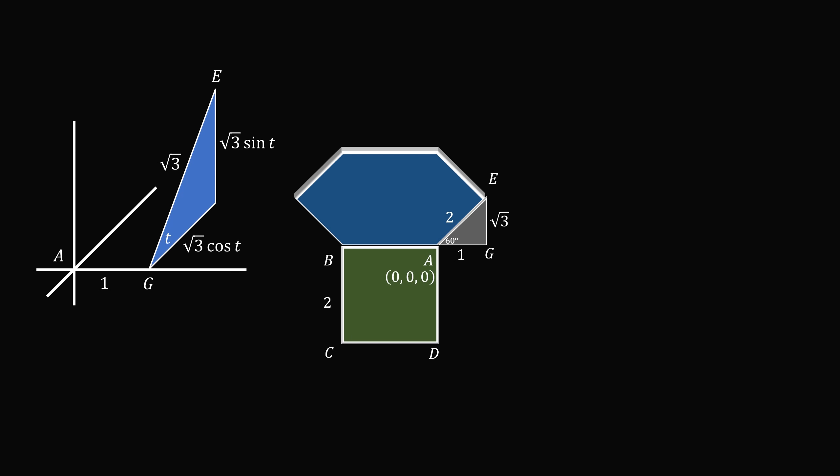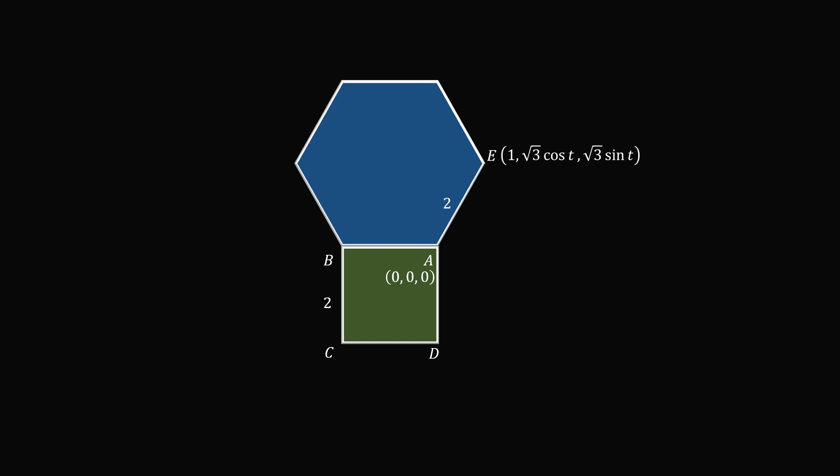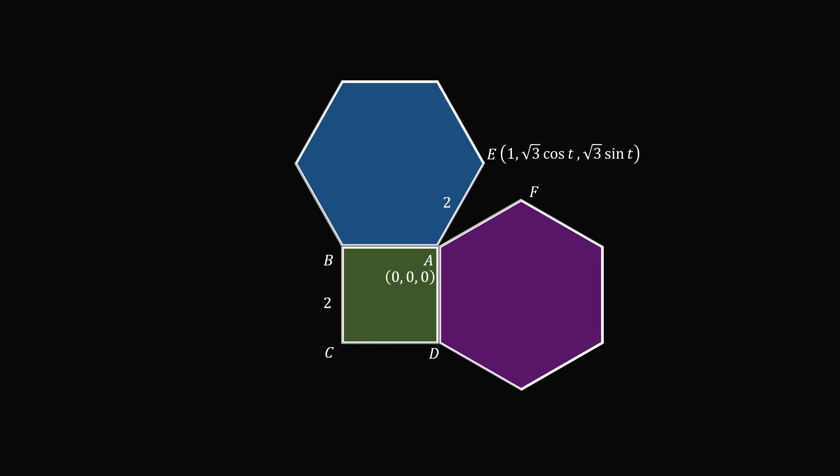So we can see that the point E has coordinates (1, square root of 3 times the cosine of t, square root of 3 times the sine of t). We can now do a similar calculation for the other hexagonal flap. Let's figure out the coordinates of point F. This hexagonal flap is rotated at the same angle t about the side AD. By similar calculation we can see that the coordinates of F are equal to (square root of 3 times the cosine of t, 1, square root of 3 times the sine of t).